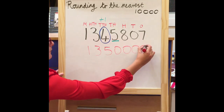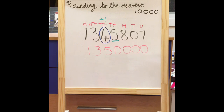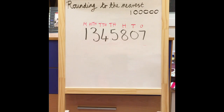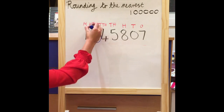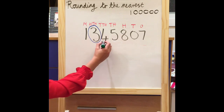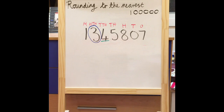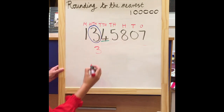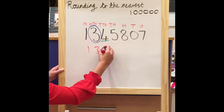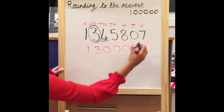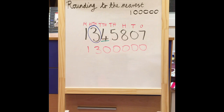So 1,345,807 rounded to the nearest ten thousand is 1,350,000. Let's look at the same number again but round it to the nearest hundred thousand. Because I'm rounding to the nearest hundred thousand I must circle a digit in my hundred thousands column — in this case it's a three. Circle the number, look next door — next door I have a four. Four is less than five, so my hundred thousands stays the same, I bring this down. Numbers on the left stay the same. Numbers on the right, zeros are your name — all of these numbers are now zeros. So 1,345,807 rounded to the nearest hundred thousand is 1,300,000.